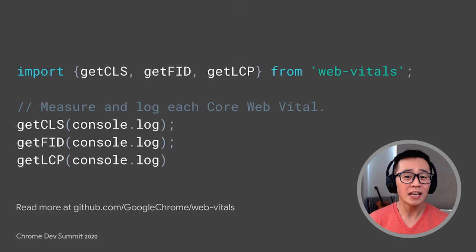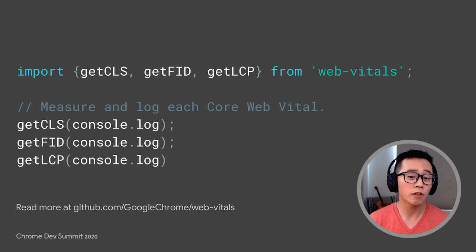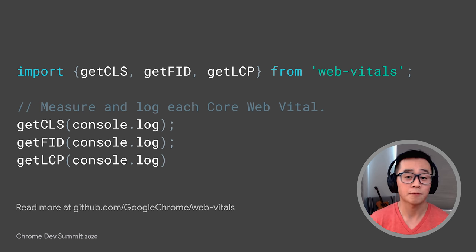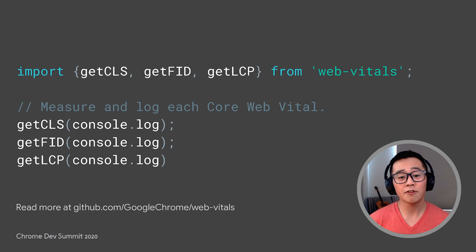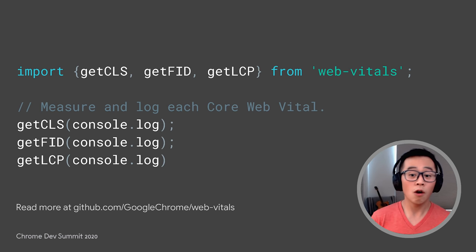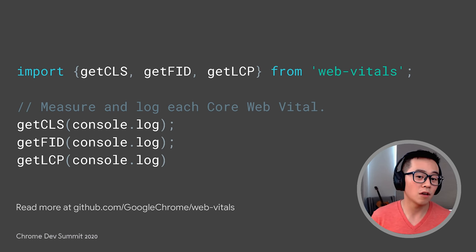You can collect this data using the Web Vitals JavaScript library linked here, or check with your RUM analytics provider for any out-of-the-box support they might provide. With the data collected, you can look at every type of input — from the instant ones that don't hit a blocking task, to the ones where there is a delay — and answer an important question: when the user did experience a delay in response to their input, how bad was that delay?